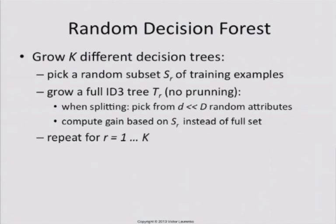There is a catch: you don't do it on the full set of attributes. You do it on a subset of examples and also on a subset of attributes. So you might pick just a few attributes and train a tree based on just those. You repeat that for each one of the sets. As a result, you end up with K different trees — each tree separates its training data perfectly and each tree also looks at different attributes in the data.